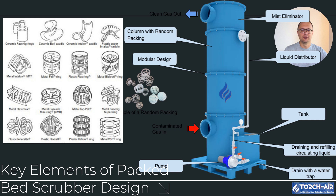Corrosion resistance: most packed bed scrubbers deal with some pretty nasty stuff — corrosive gases, harsh chemicals, you name it. So you'll want materials that can handle it. Stainless steel, polypropylene, and chemical resistant plastics are popular choices to keep your scrubber from rusting away.